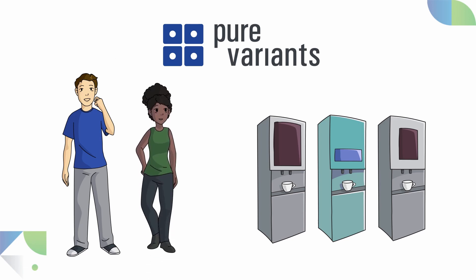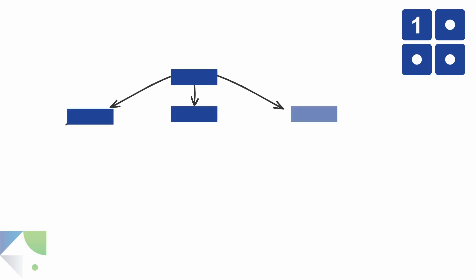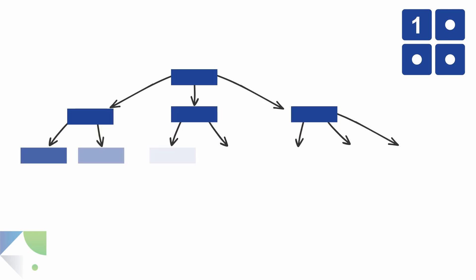Michelle explains that for every industry or product line, Pure Variance is always implemented in just four steps. In step one, the entire product line is described in a generic model called Feature Model.